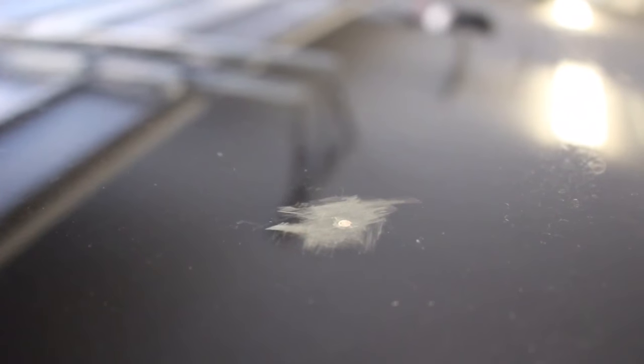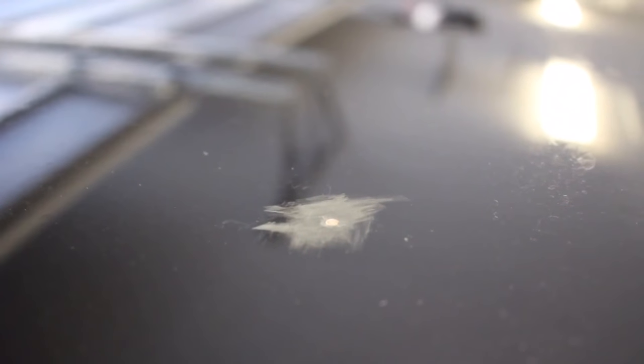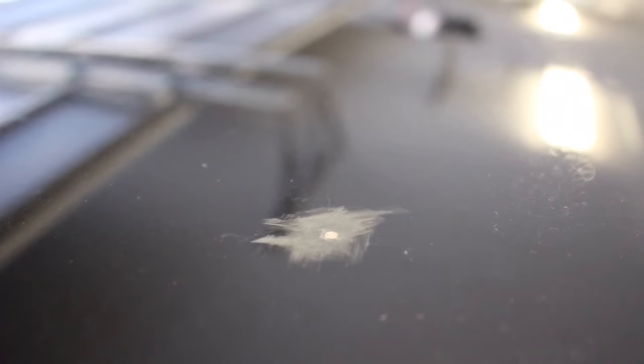Once you finish sanding, it should look something like this. As you can see, I've removed all the rust in that area, and I've also went around the area just a little bit to help smoothen out the finish.